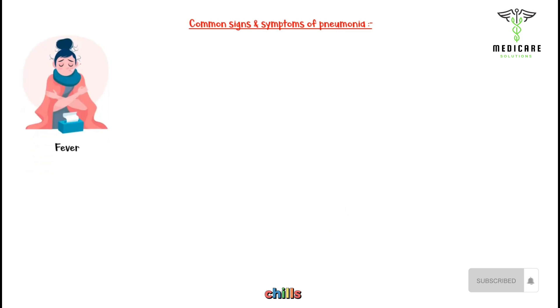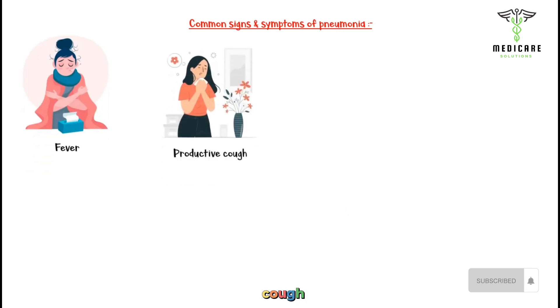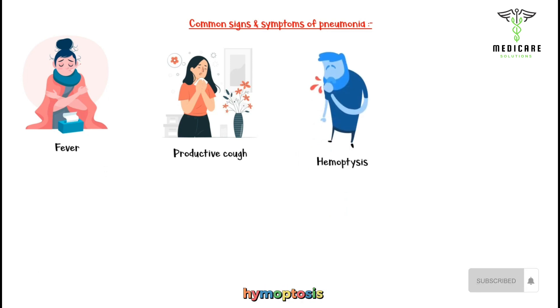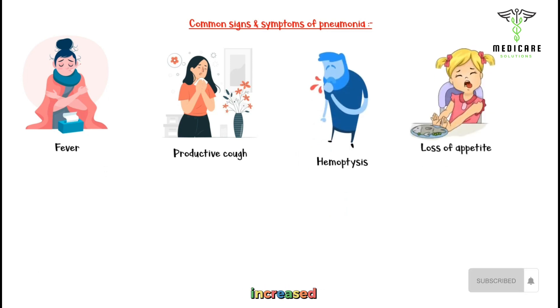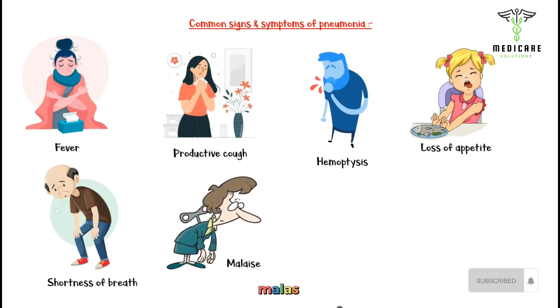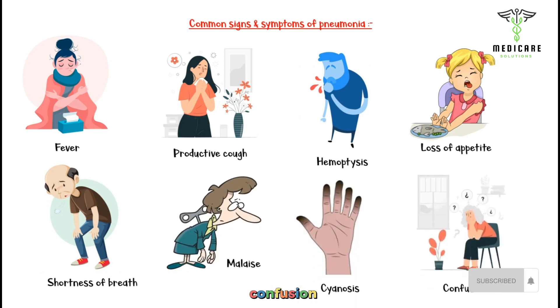Common signs and symptoms of pneumonia include fever with or without chills and rigors, productive cough with white or purulent sputum, coughing up blood (hemoptysis), loss of appetite due to increased inflammatory mediators, shortness of breath due to impaired oxygen exchange, malaise, cyanosis, and confusion.